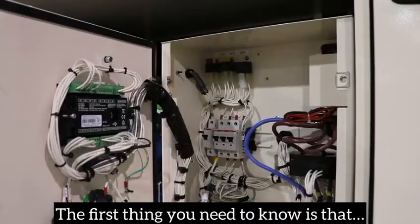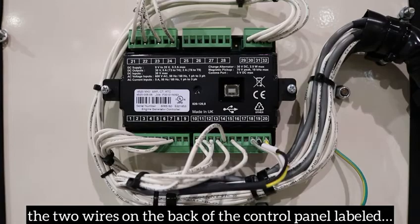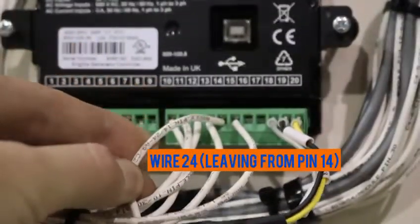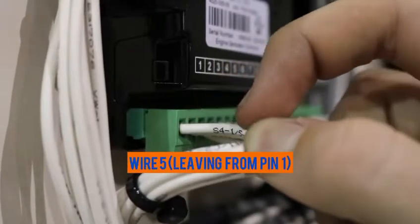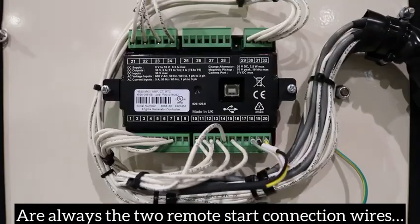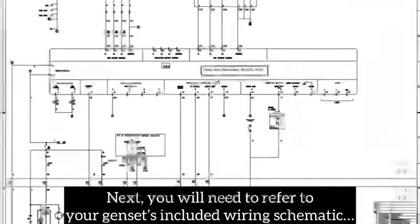The first thing you need to know is that the two wires on the back of the control panel labeled wire 24 and wire 5 are always the two remote start connection wires.